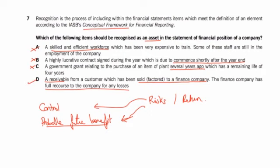The answer to D would be different if it were without recourse. If it's without recourse, they can't give it back to us, so we wouldn't be taking any risks and it wouldn't be ours. But in this case, we are keeping the risks, so it remains our asset. The answer is D.